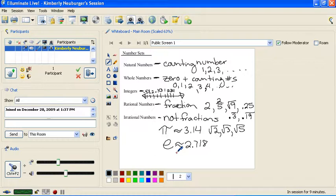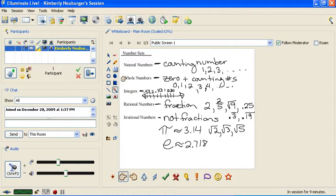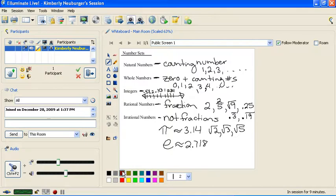So these are the different number sets that we have here. And all of these numbers that you see here are what we call real numbers. So everything you see here is a real number.